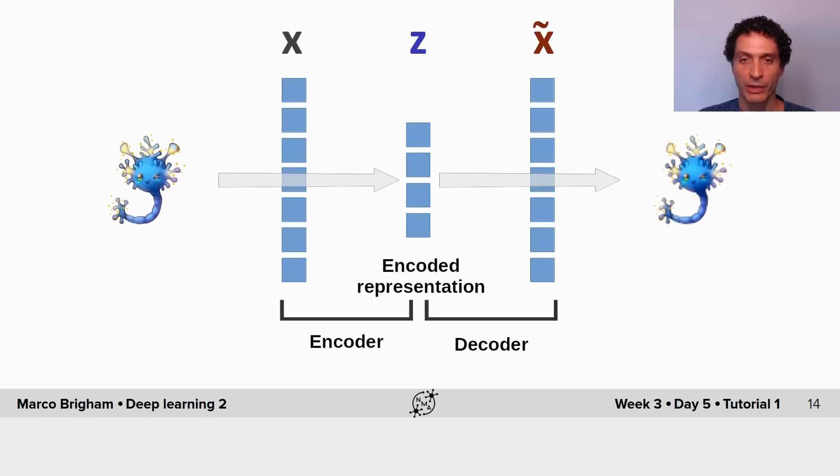So here is another schema of our autoencoder where we have the encoder part and the decoder part corresponding to x on the inputs to z on the bottleneck layer and x tilde on the output.